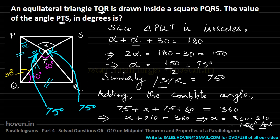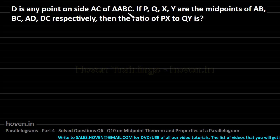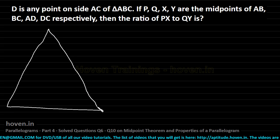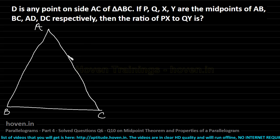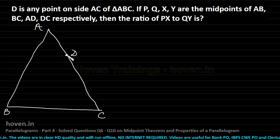Let us move on to our next question. D is any point on side AC of triangle ABC. Let me draw triangle ABC: this is A, this is B, and this is C. D is any point on side AC, so let me mark point D on side AC.